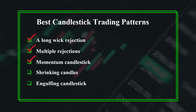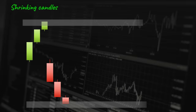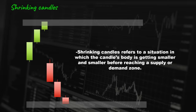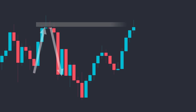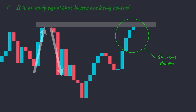Now let's move on to the next pattern — number four: shrinking candles. Shrinking candles refers to a situation in which the candle's body is getting smaller and smaller before reaching a supply or demand zone. Notice how the candle's body gets smaller as the price approaches a key level of resistance. The psychology behind shrinking candles is that it shows the loss of momentum from the buyers, which results in a smaller distance pushed by the price. It is an early signal that buyers are losing control and prices might reverse from the area. This pattern works best when accompanied by another reversal pattern, like a long wick rejection at the end. The same concept is valid for the bearish scenario.